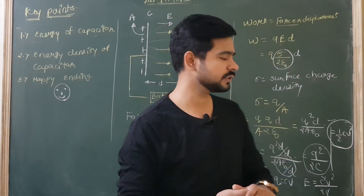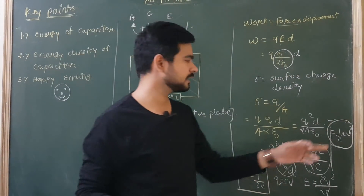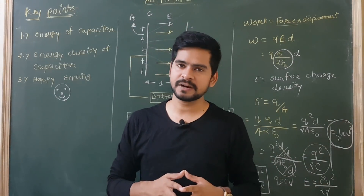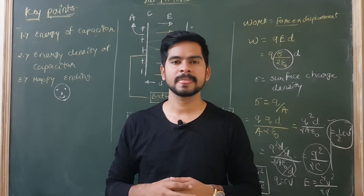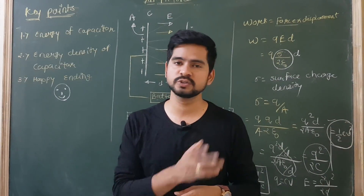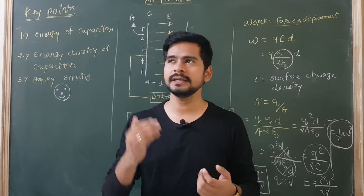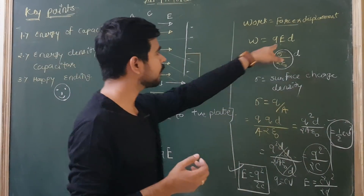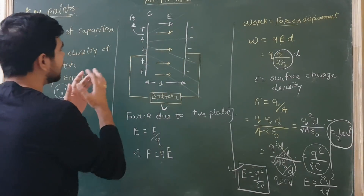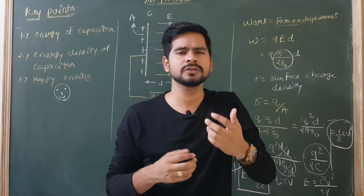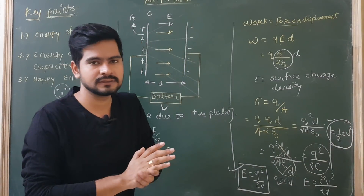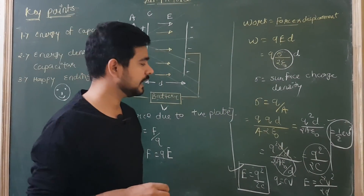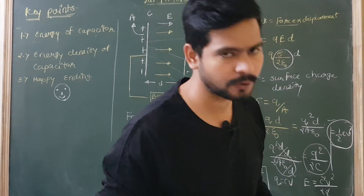So you have two equations: number one is Q²/2C, and the second one is ½CV². You can use either equation to get the value of energy. If you have charge and capacitance, use Q²/2C. If you have capacitance and voltage, use ½CV². That was the calculation of energy of the capacitor. Take a screenshot and then we will discuss energy density.